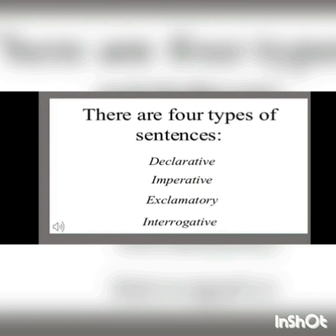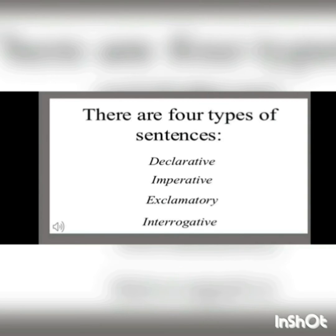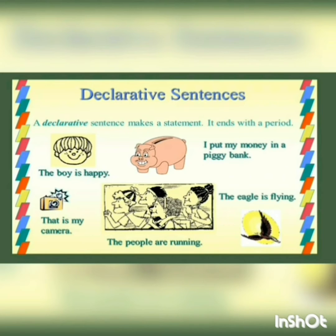Let's move on to see how many types of sentences there are. There are four types of sentences: the first one is a declarative or assertive sentence, the second is an imperative sentence, the third is an exclamatory sentence, and the last one is an interrogative sentence.